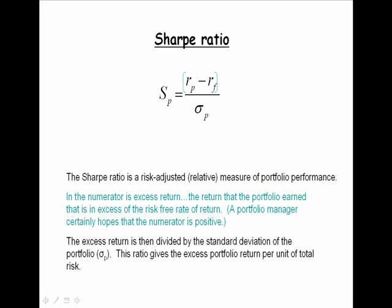The excess return is then divided by some measure of risk. For the Sharpe measure, that measure of risk is the standard deviation of the portfolio. So this ratio, the Sharpe ratio, gives us excess portfolio return per unit of total risk.